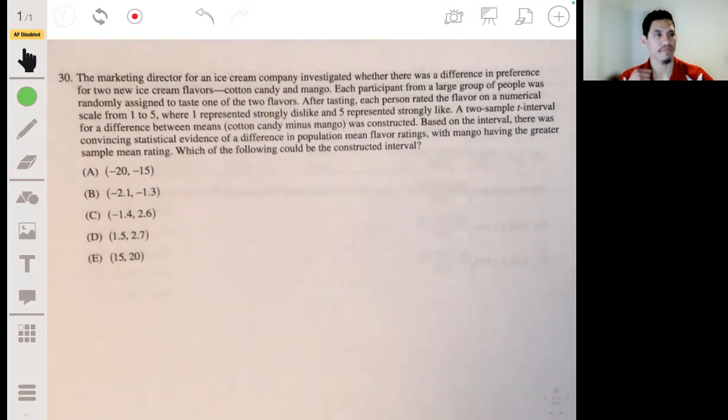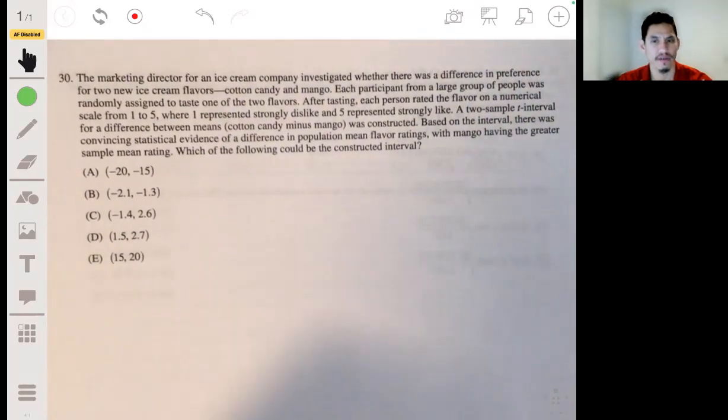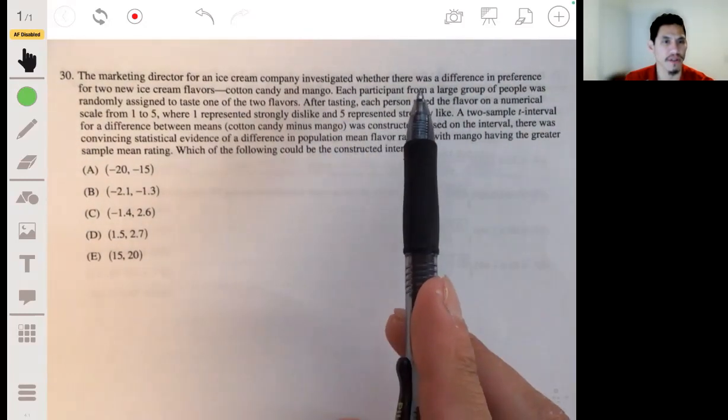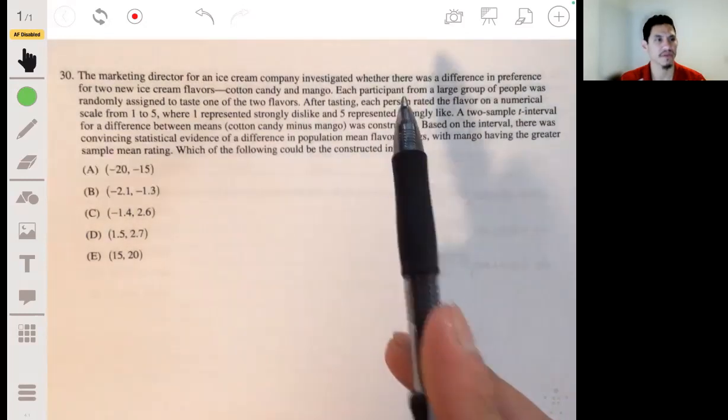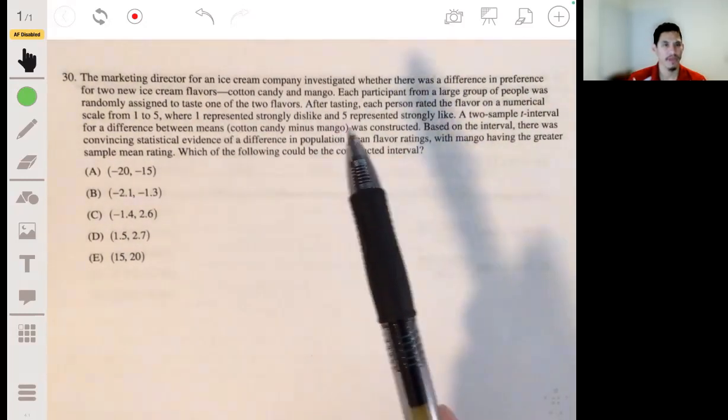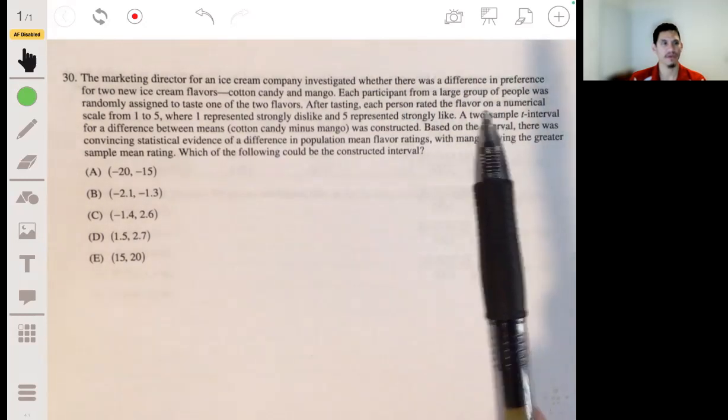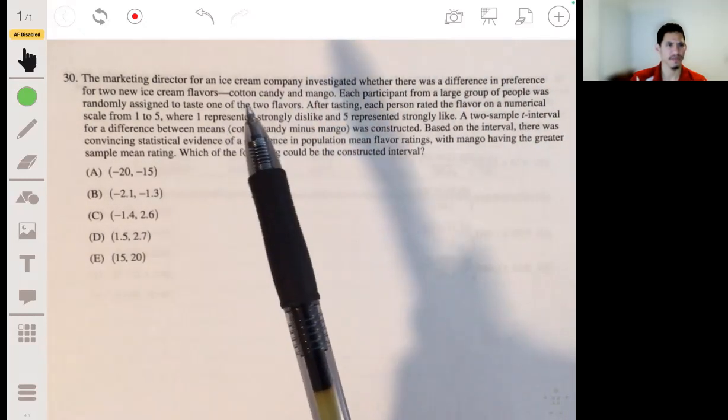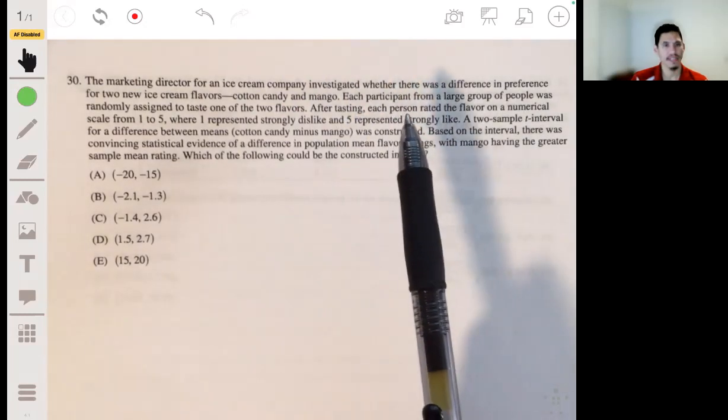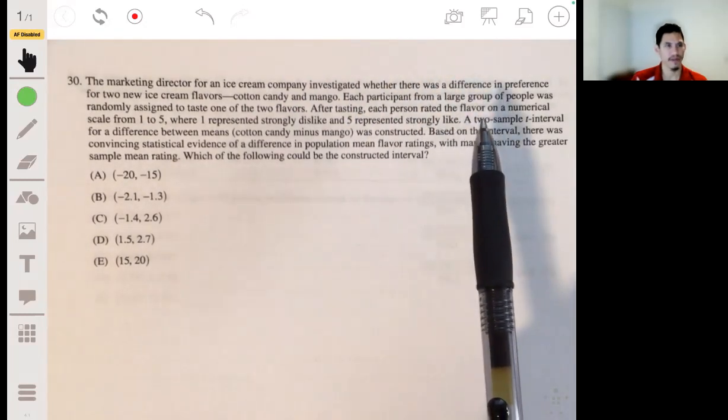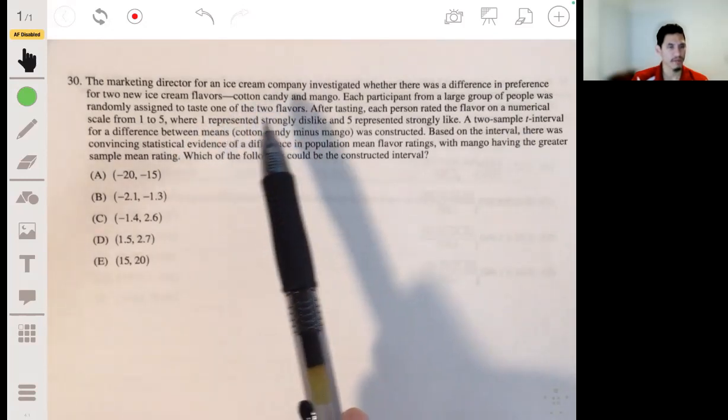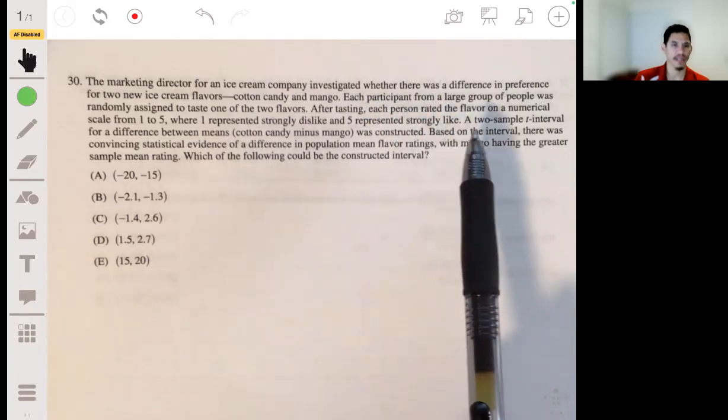Alright, problem 30. The marketing director for an ice cream company investigated whether there was a difference in preference for two new ice cream flavors, coffee and candy and mango. Each participant from a large group of people was randomly assigned to taste one of the two flavors. After tasting, each person rated the flavor on a numerical scale from one to five.